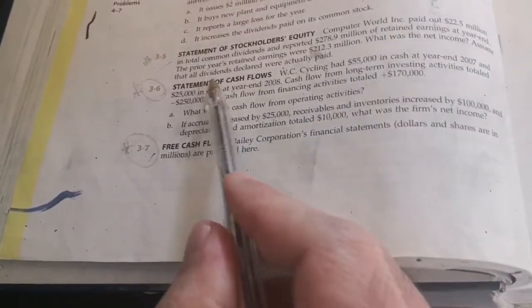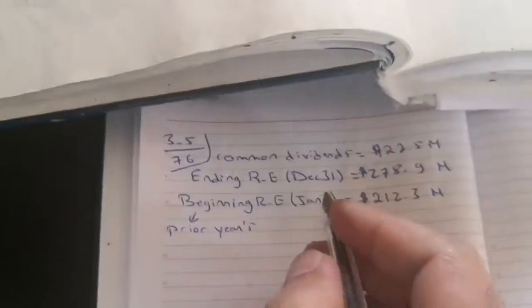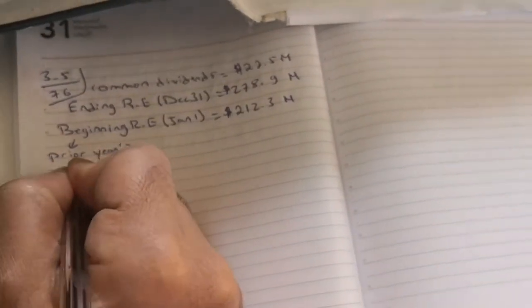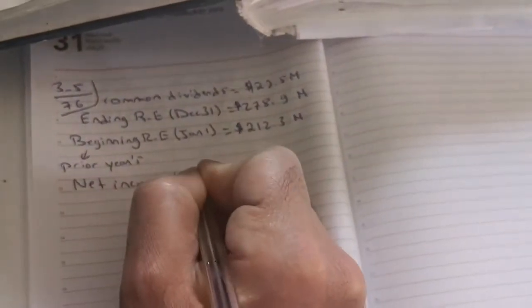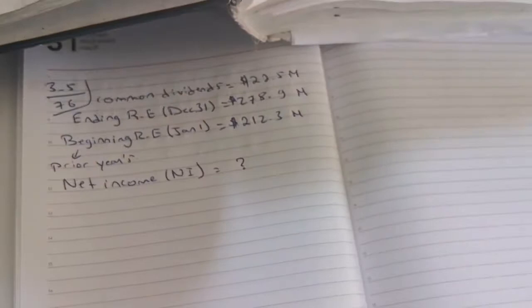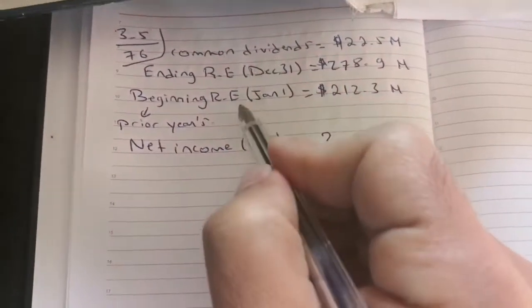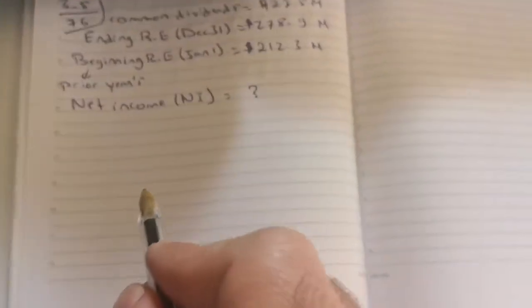What was the net income? Assume that all dividends declared were actually paid. So it's required to compute net income. We can also abbreviate it by NI. It is missing.